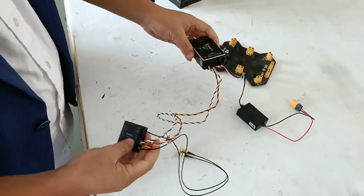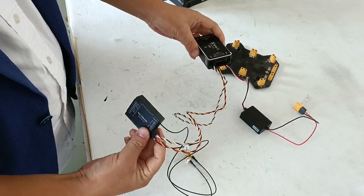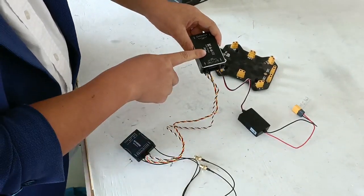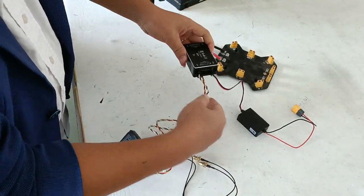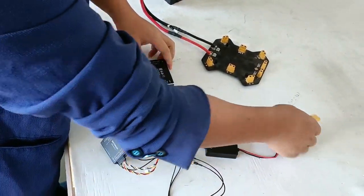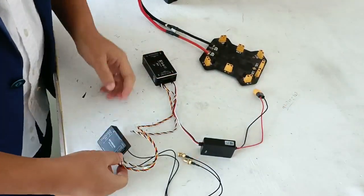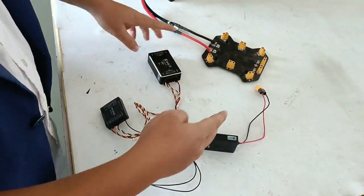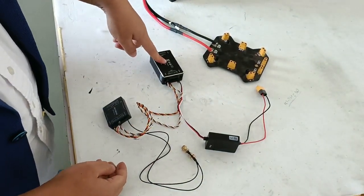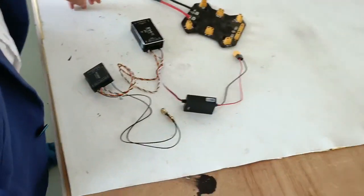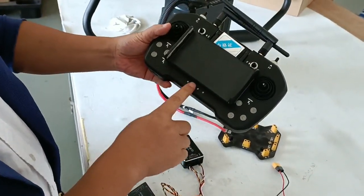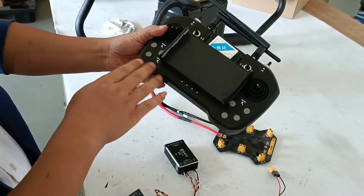Now we've connected the receiver to the flight controller. This is a PMU. As I said, we connect the battery with the flight controller six times. The remote control is now turned off.